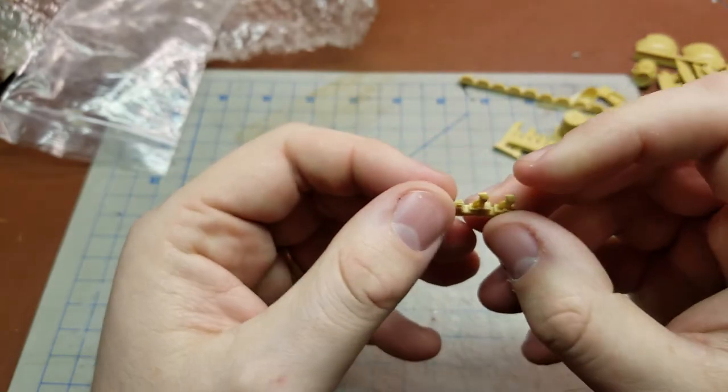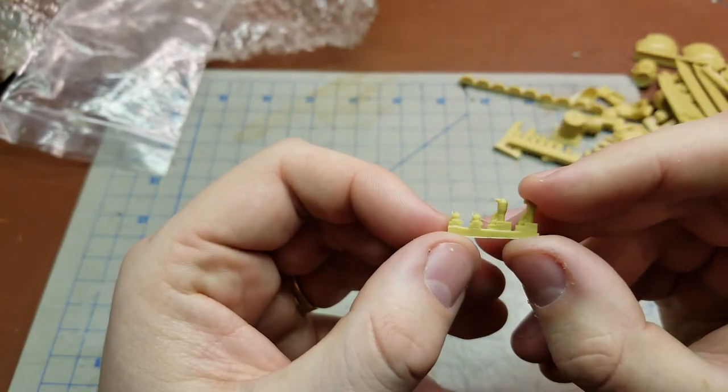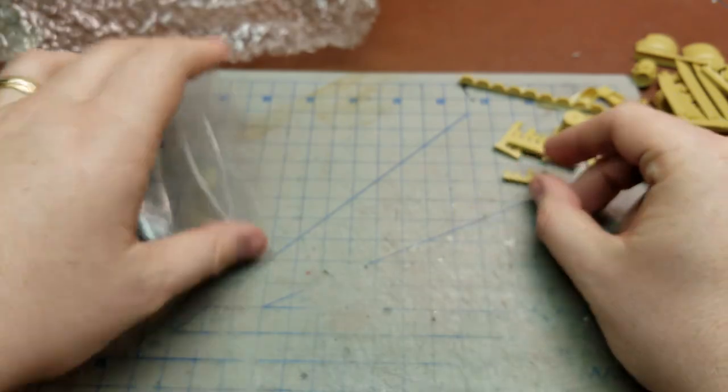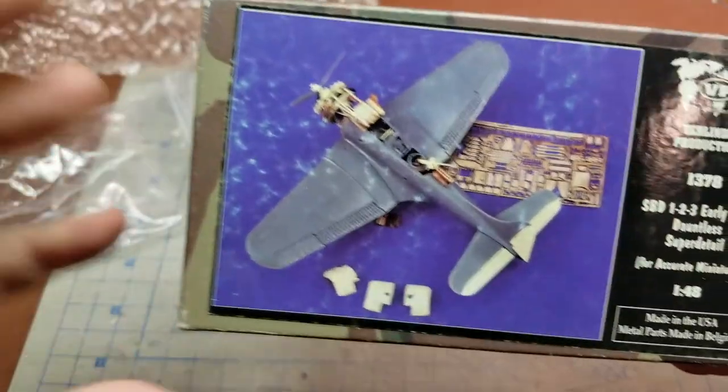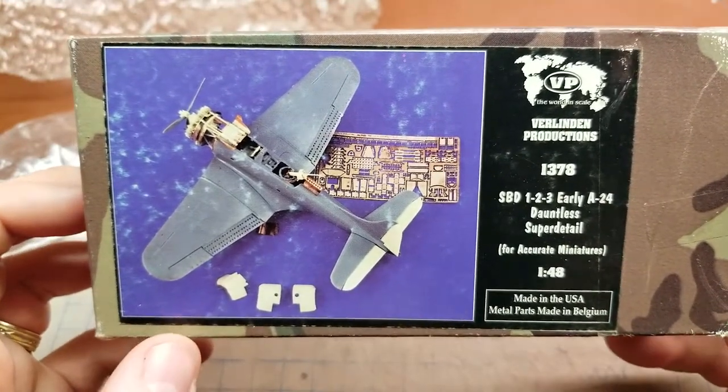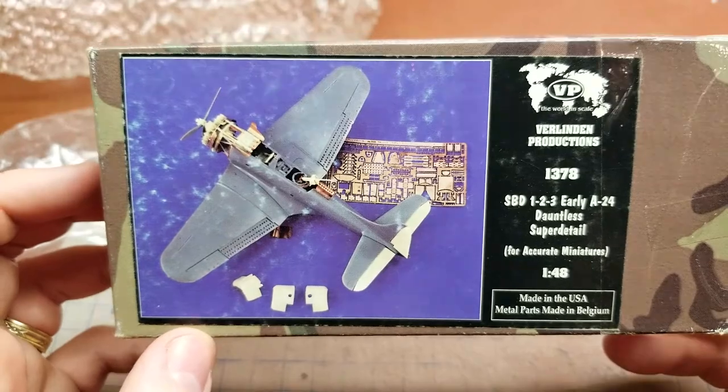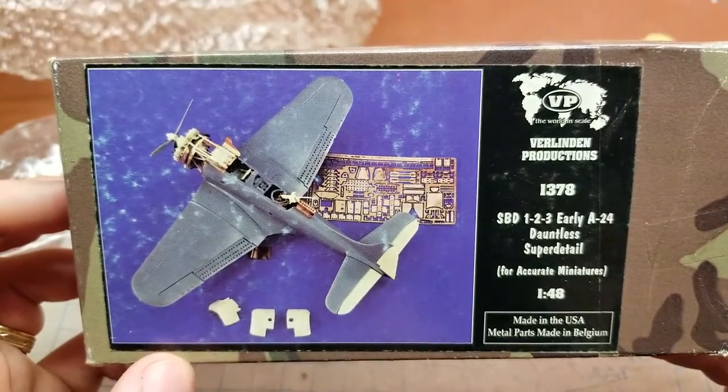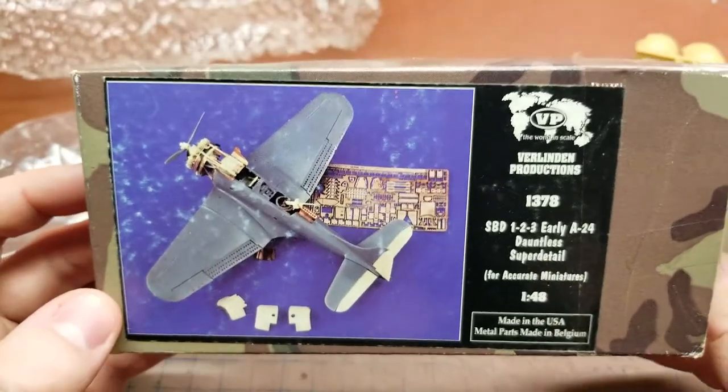And then the last couple of little parts here on this tree. So that has been a look around the Verlinden Productions SBD 1-2-3 Early Production Dauntless. And this is the super detail set for the 1/48 scale Accurate Miniatures kit. Hope you guys have enjoyed the look.